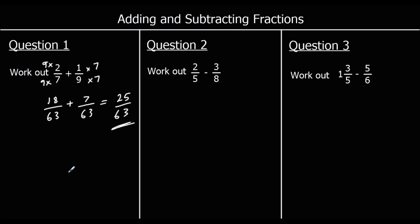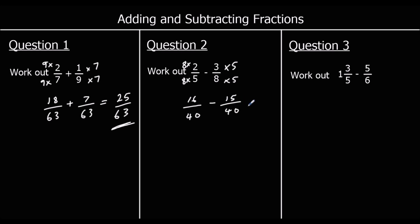Question two: we're going to multiply top and bottom of two-fifths by eight, and top and bottom of three-eighths by five, so they'll both be out of forty. Two eights are sixteen over forty, minus three fives which is fifteen over forty. Sixteen minus fifteen is one, so the answer is one-fortieth.